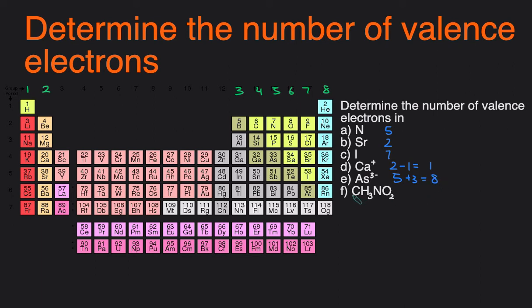For the last example, we're going to look at how to determine the number of valence electrons of a compound. You just add the individual number of valence electrons together, and that gives you the total.